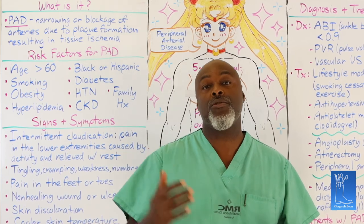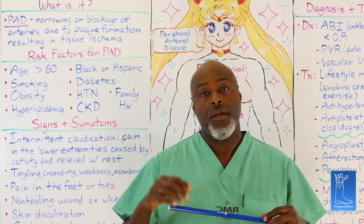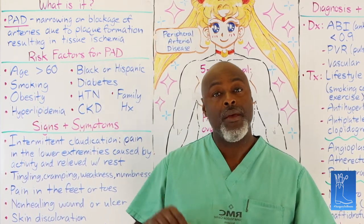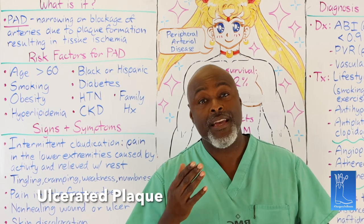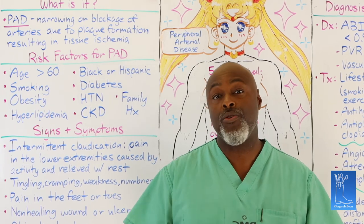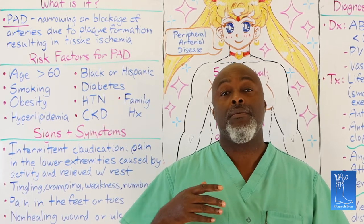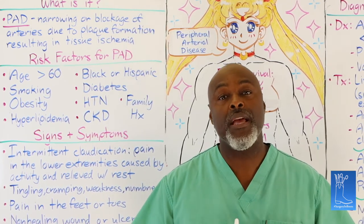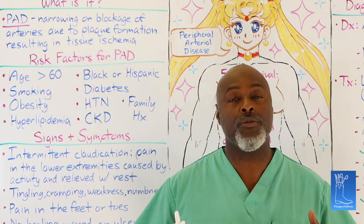Once you have greater than 50% stenosis, that's the magic number — that's usually when you start developing symptoms. The problem is that sometimes those blockages aren't smooth; they're rugged, and if they have an ulceration in them, a clot can form, break off, and go downstream. That's when you get a stroke, a heart attack, or acute symptoms from peripheral vascular disease.